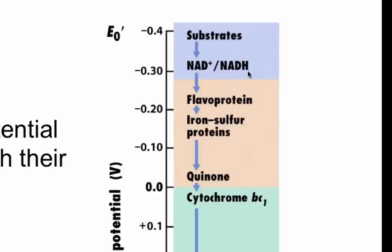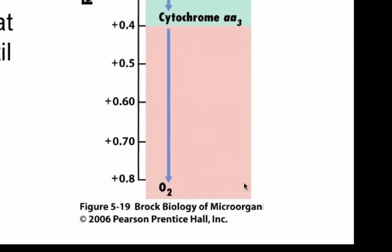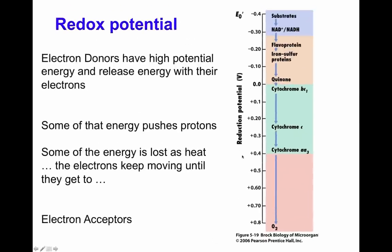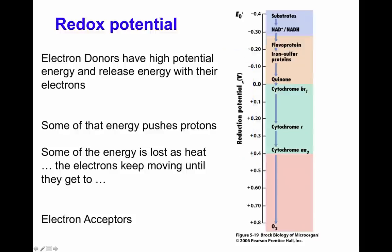The NADH molecule is a much better electron donor than quinone. Since the molecules in the electron transport chain are arranged according to redox potential, each member donates its electrons to another molecule with a more positive redox potential. At the end, the ultimate electron acceptor in respiration is oxygen, with a redox potential of 0.8 volts. The units used in redox potential are volts, and we're going to see how this voltage is determined.